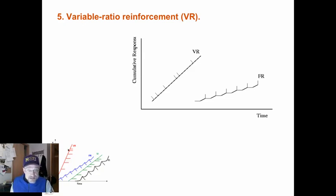Variable ratio. And there you see there. Reinforcement after varying numbers of responses. Reinforcement after a varying number of behavioral responses. It's the most powerful type of reinforcement schedule for learning and maintaining behaviors. That is, the greatest persistence of all the reinforcement schedules. Once the reinforcement is discontinued, the response behaviors continue the longest.